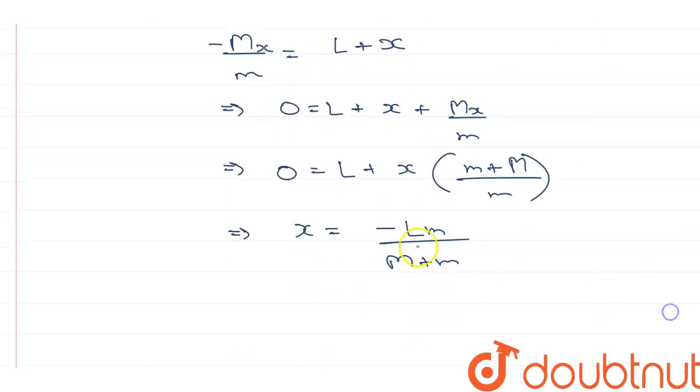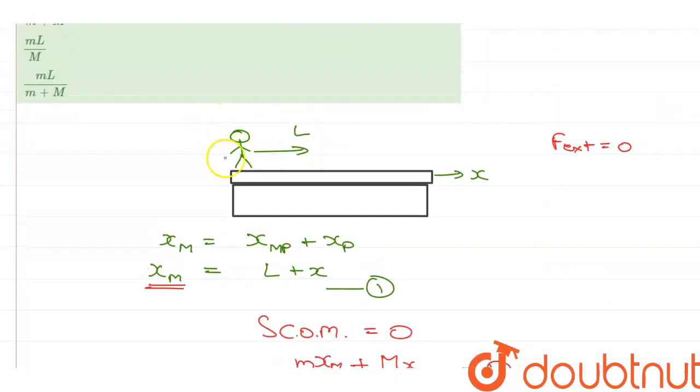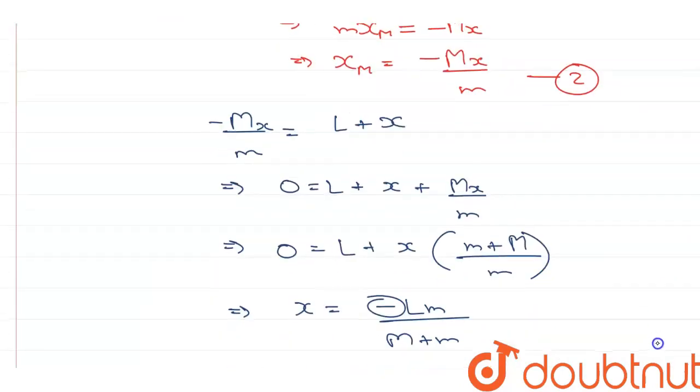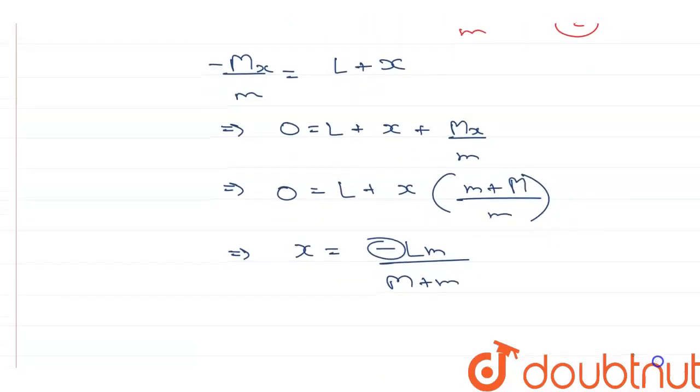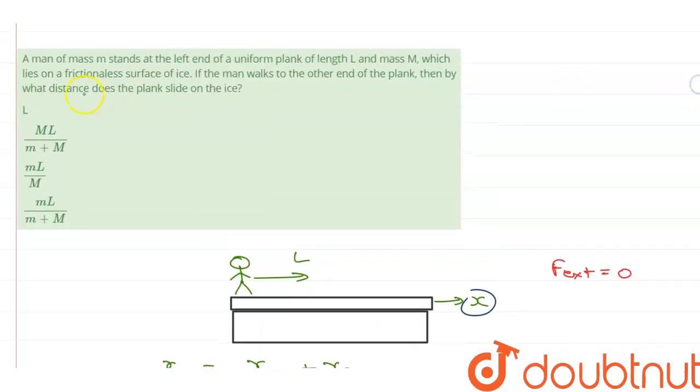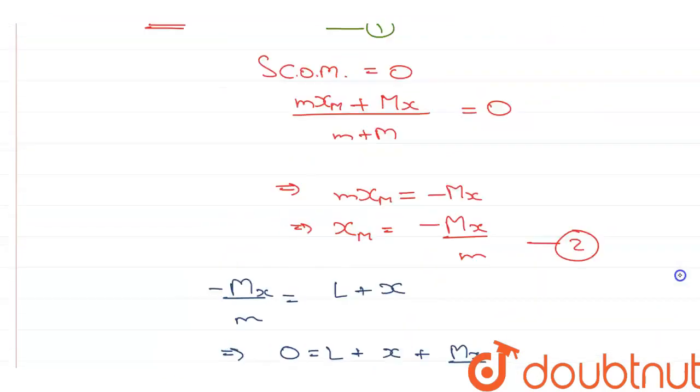Now, this negative sign signifies the fact that since this man is moving towards the right, the displacement of this plank will be in the opposite direction. So, the magnitude of displacement will be mL upon M plus m. The correct answer is mL upon M plus m.